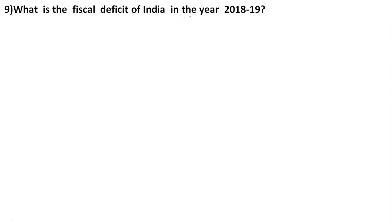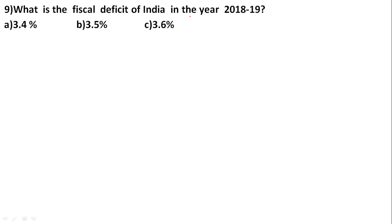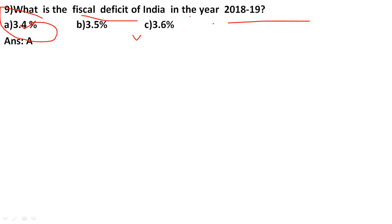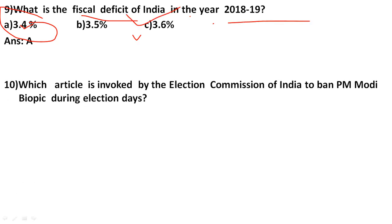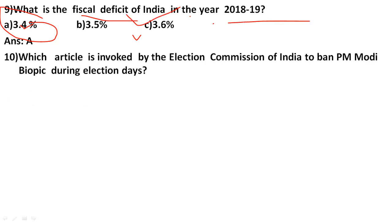What is the fiscal deficit of India in the year 2018-19? The options are 3.4%, 3.5%, and 3.6%. The correct answer is option A: 3.4 percent. Next, which article is invoked by the Election Commission of India to ban the PM Modi biopic during election time?